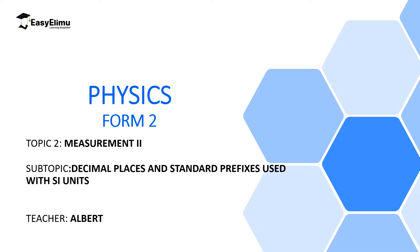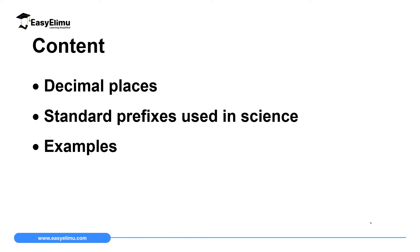Welcome to ECLIMO Learning Simplified. In the previous lesson, we discussed standard form and significant figures. Now in this lesson, we are going to discuss decimal places and the standard prefixes most commonly used in physics. My name is Albert. By the end of this lesson, you should be able to describe how to assign specific decimal places to a number, discuss the standard prefixes used in science and their significance, and handle questions concerning decimal places and standard prefixes.